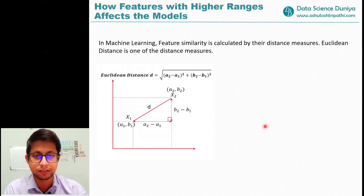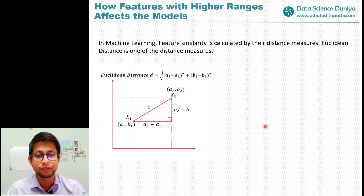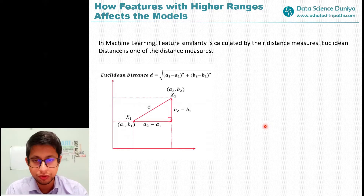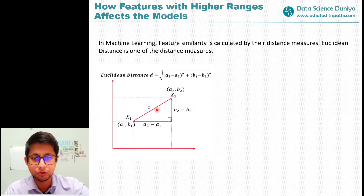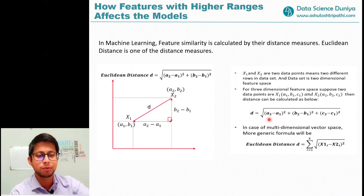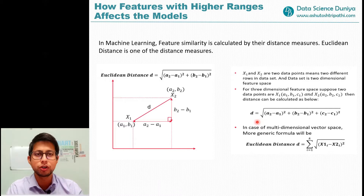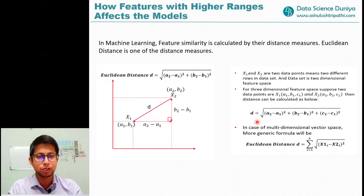One of the distance measures is Euclidean distance. In this video I'm just including Euclidean distance to give you an idea of how distance is calculated for different features. If there are two points x1 and x2 with coordinates (a1, b1) and (a2, b2), then the distance between x1 and x2 is the square root of (a2 − a1)² + (b2 − b1)². For multi-dimensional feature space, distance can be extended similarly.